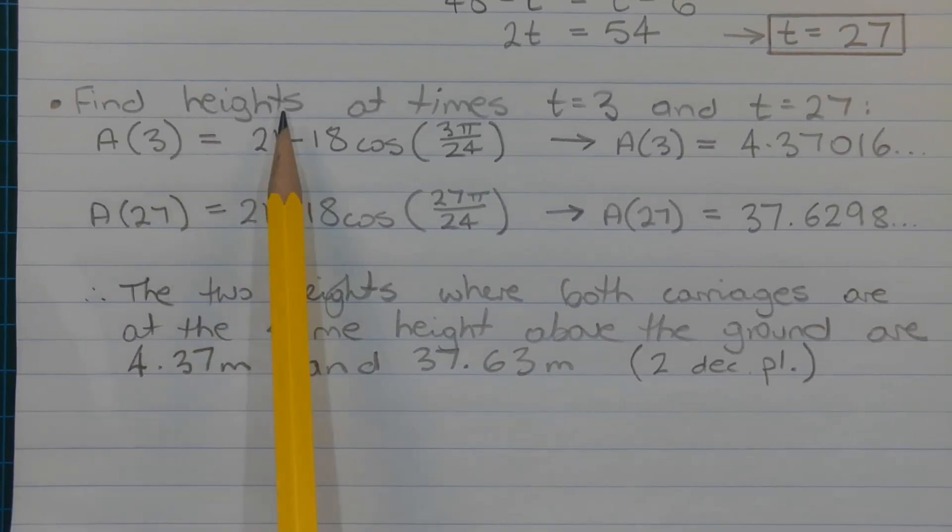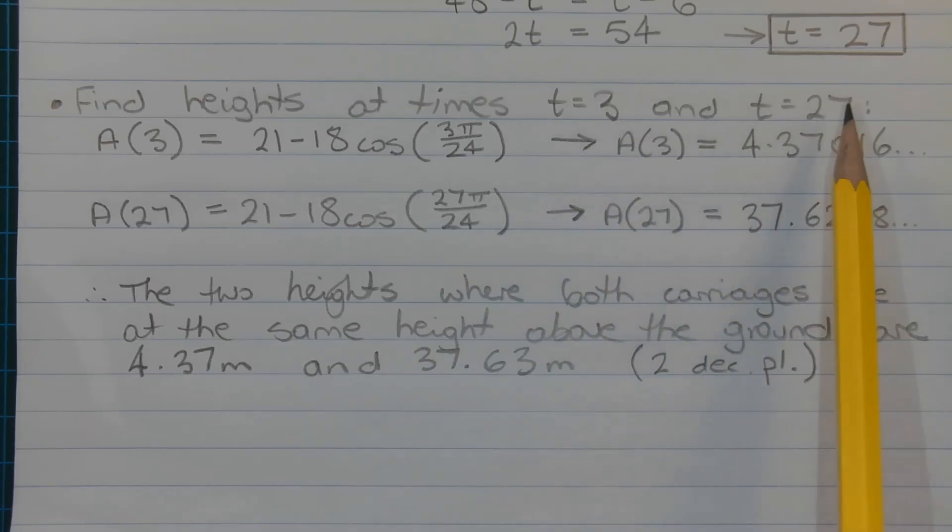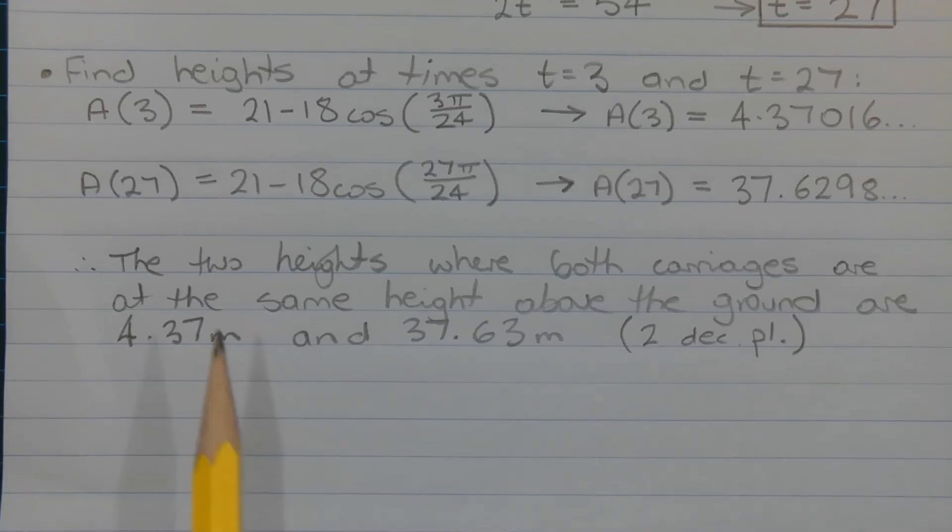Finally we need to find the heights at the times where t equals 3 and t equals 27. Because that's what the question is asking for. So we can use A(t) for that. So A(3) equals 21 minus 18 times cos(3π/24). And that evaluates to 4.37016 and so on. A(27) that evaluates to 37.6298 and so on. But we need to round those values correct to two decimal places. Therefore the two heights where both carriages are at the same height above the ground are 4.37 metres and 37.63 metres correct to two decimal places.